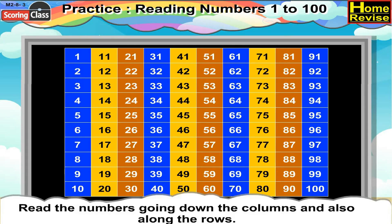Now, let us read them along the rows. The first row has 1 as its first number. If you add 10 to it, it will be 1 plus 10, that is 11, which is the second number of the first row. Then, if you add 10 to 11, it is 21, which is the third number of the first row. Then, similarly, 31, 41, 51, 61, 71, 81, 91.